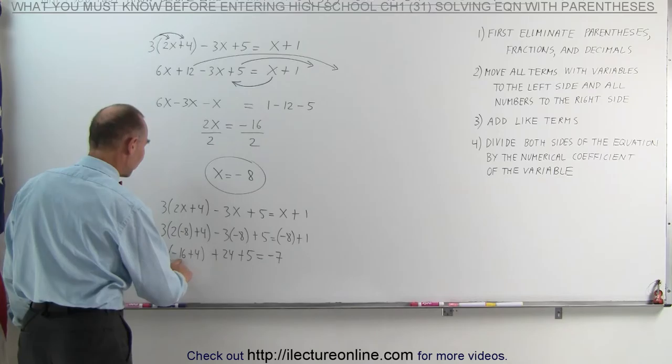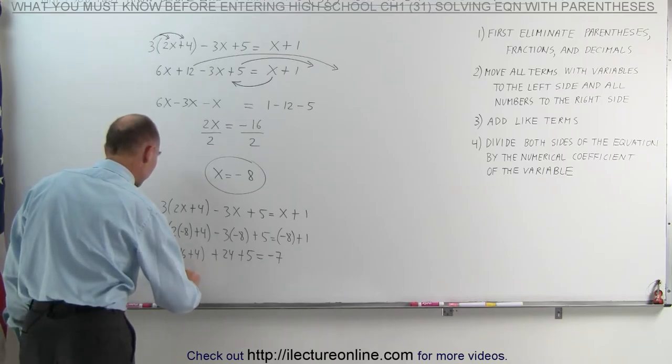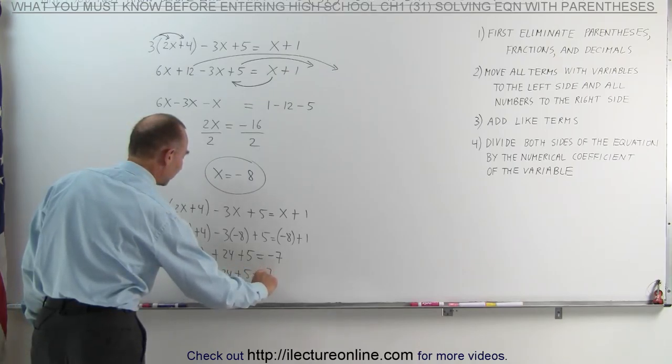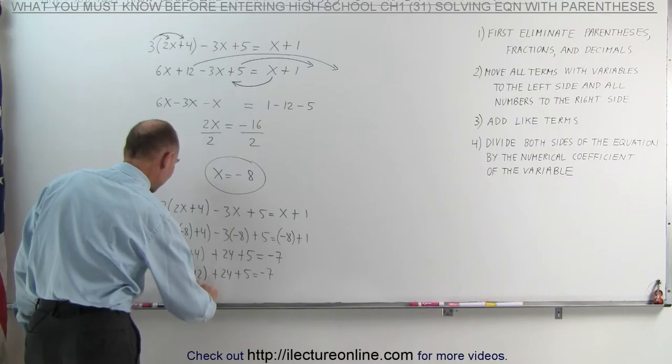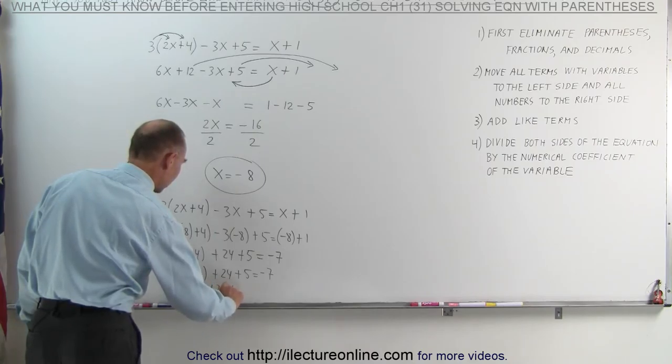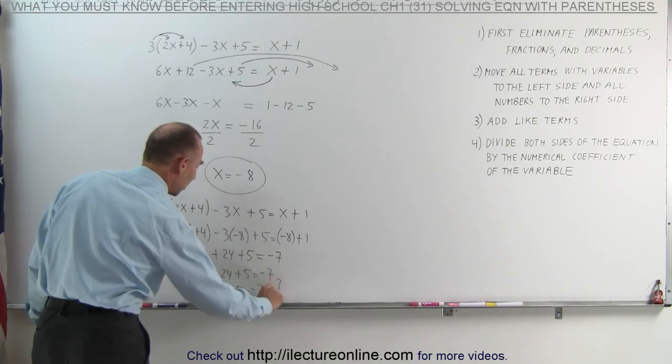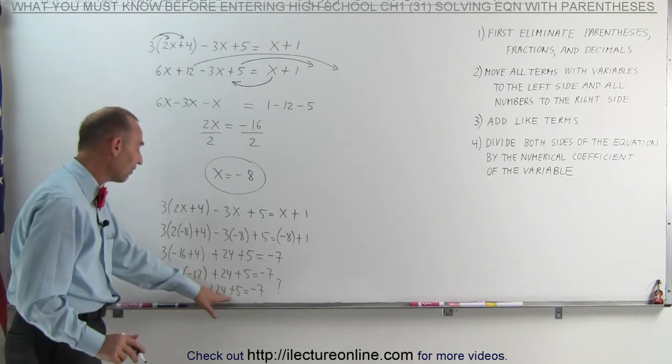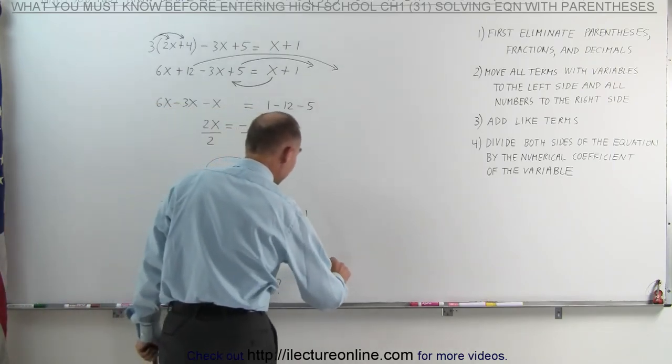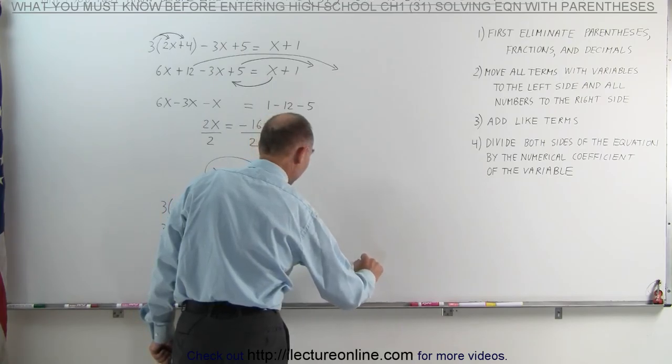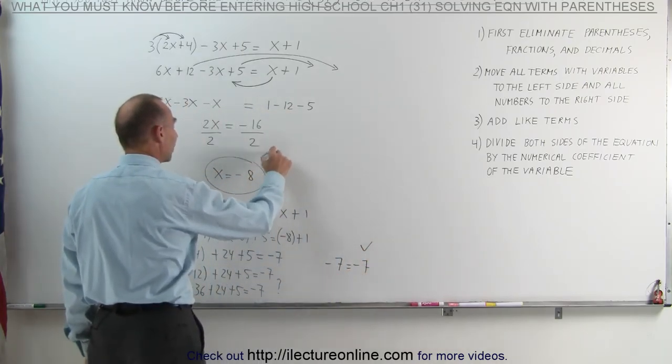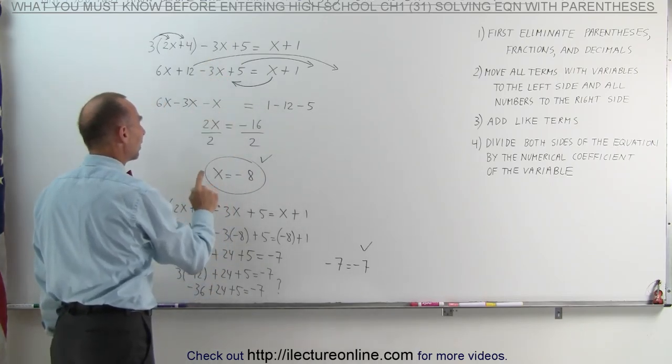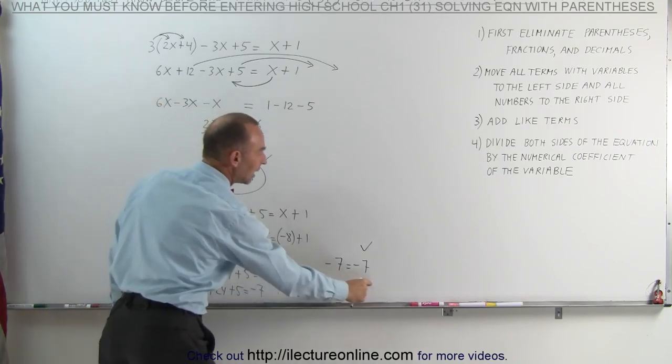Continuing to simplify this, negative 16 plus 4 is a negative 12. 3 times a negative 12 plus 24 plus 5 equals negative 7. And multiplying this together, we get negative 36 plus 24 plus 5 equals negative 7. Now the question is, is that true? Well, negative 36 plus 24 is a negative 12. Add 5 to that, we get negative 7. Which means that, yes indeed, negative 7 equals negative 7. That means that this was the correct solution to our problem. We found the solution. We solved for the equation. We realized that when x equals negative 8, the left side equals the right side. And that's what we mean by solving equations.